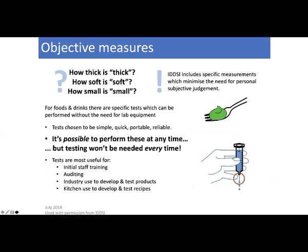The Australian standards are predominantly based on descriptions, whereas IDDSI has objective measurements that help increase safety and minimise subjective characterisation. The objective measures aim to ensure when one person says something is 'thick' or 'soft,' everyone is talking about the same thing. Tests were chosen to be simple, quick, portable, and reliable — based on advice from a nurse at the National Patient Safety Agency who attended coronial inquests, who said people needed a way to assess at the bedside or out in a café.